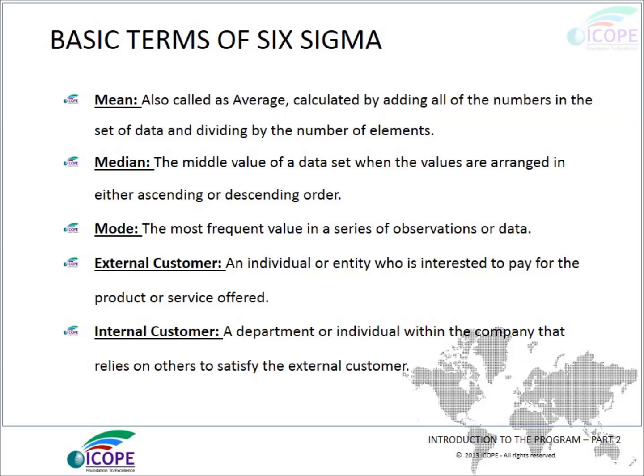What is mean? It is also called average, calculated by adding all the numbers in the set of data and dividing by the number of elements. What is median? The middle value of the data set when values are arranged in either ascending or descending order. What is mode? The mode is the most frequent value in the series of observations of data.